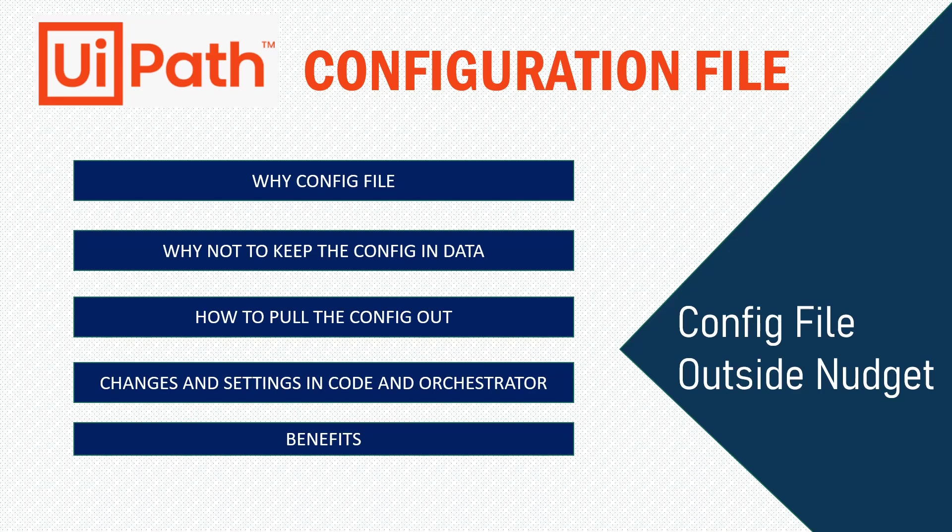That brings us to the end of this video. In this video we saw how to keep the configuration file in a location other than the data folder, the settings needed in Init All Settings, how to create an asset in Orchestrator to store the configuration file path, and the benefits of keeping the config file outside the nugget. Thank you for watching — please subscribe to the channel, and happy automation!